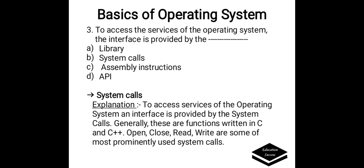To access the services of the operating system, the interface is provided by: Options are A. Library, B. System calls, C. Assembly instructions, D. API. Correct answer is B, System calls. To access services of the operating system, an interface is provided by system calls. Generally, these are functions written in C and C++. Open, close, read, and write are the most prominently used system calls.